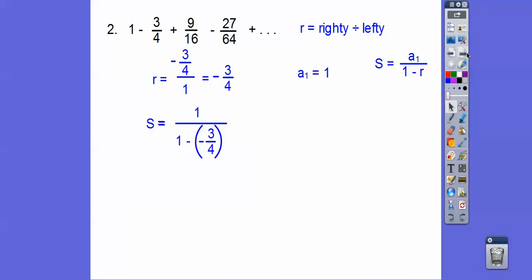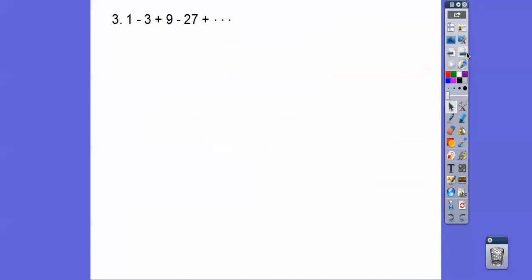1 over 1 minus a negative 3 fourths. So 1 minus a negative 3 fourths is 1 plus 3 fourths, and 1 is 4 fourths. So we get 1 over 7 fourths, which is just 4 sevenths. So that would converge to 4 sevenths.